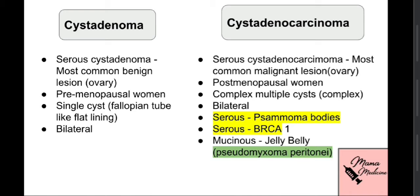To summarize the key differences: cyst adenoma occurs in premenopausal women, has a single cyst, and is benign; cyst adenocarcinoma occurs in postmenopausal women and has complex, multiple cysts. Important associations with serous cyst adenocarcinoma include psammoma bodies and BRCA1 mutation, which is also linked to breast and fallopian tube cancer.